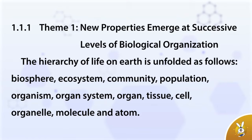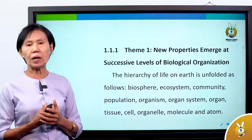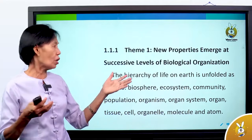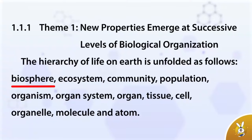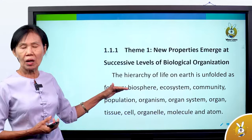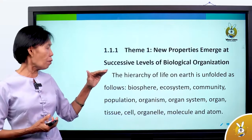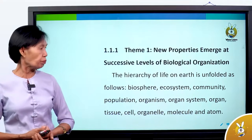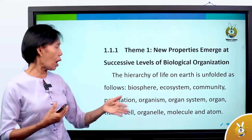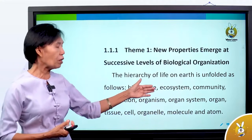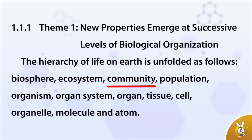The hierarchy of life is folded as follows: the ecosystem is the physical environment; the entire ecosystem includes the community; the community is made up of populations; and the population is the organism.